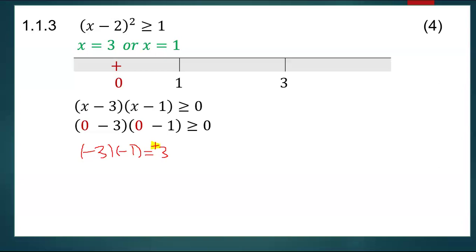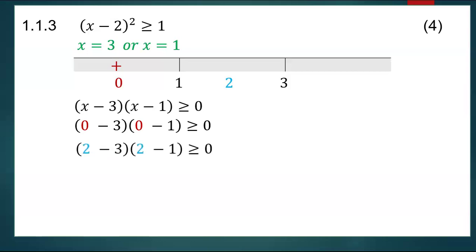Now I'm going to choose any number between one and three. Since I try to avoid fractions, the easiest number is two. Take two and substitute it into the equation where there's x. In the first bracket you will have negative one. In the second bracket you will have one. Negative one times one gives you negative one. So for values between one and three you will always get a negative answer.